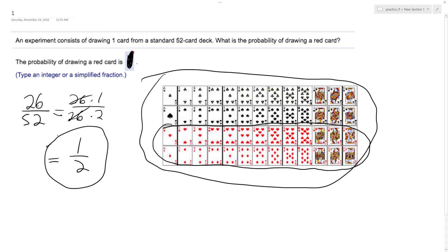So if you draw a random card from a deck, you've got a 50% chance of getting a red. I hope that helped you out. Thanks for watching. Have a great day.